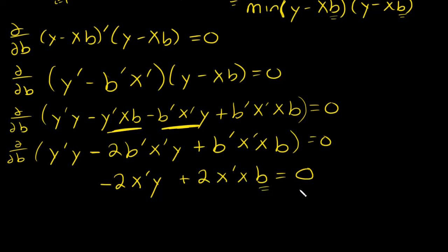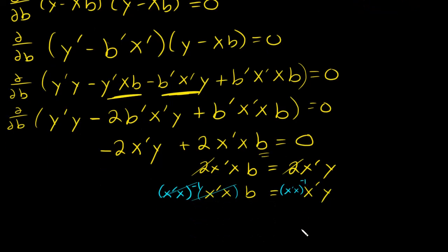Now I need to solve for B. I'll add 2X transpose y to both sides. Divide both sides by 2 to get rid of the 2. I'll have X transpose X times B equals X transpose y. Now to get B by itself, I can't just divide both sides by X transpose X because that's a matrix. Instead I can multiply both sides by X transpose X inverse. These guys will cancel and I'll be left with B on my left hand side. B equals X transpose X inverse X transpose y, and that is my least squares estimator.